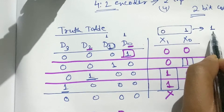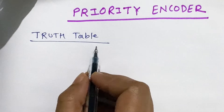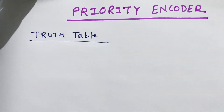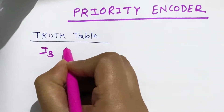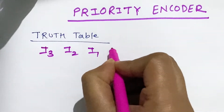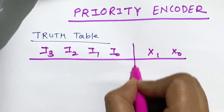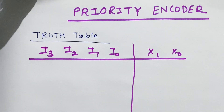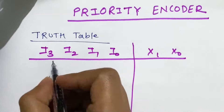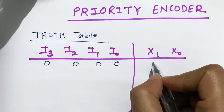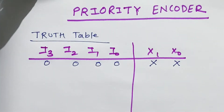Now let's construct the truth table of the priority encoder. The inputs are i3, i2, i1, i0, and the output lines are x1 and x0. The first condition is when everything is low — that will be invalid and we denote it as X, that is don't care.